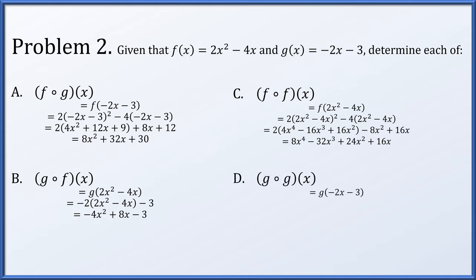Finally, g(g(x)): g(x) = -2x - 3, so we plug it into itself: -2(-2x - 3) - 3, which after multiplying by -2 and collecting like terms is just 4x + 3.